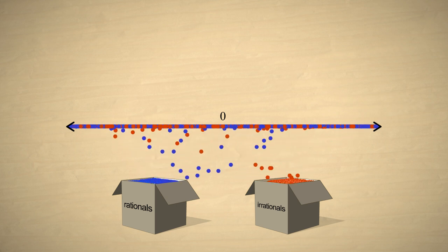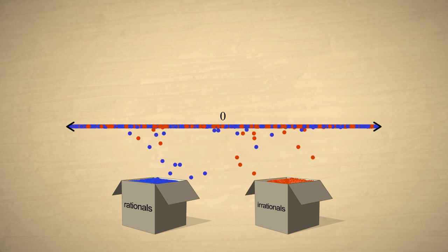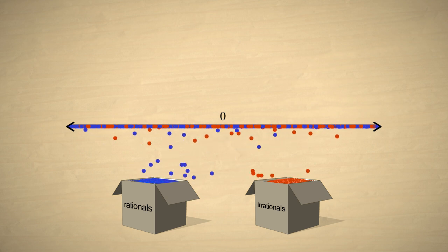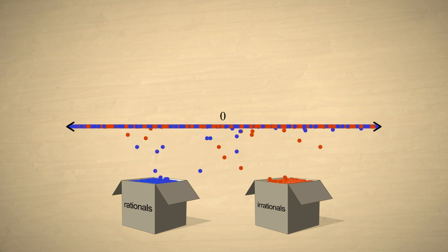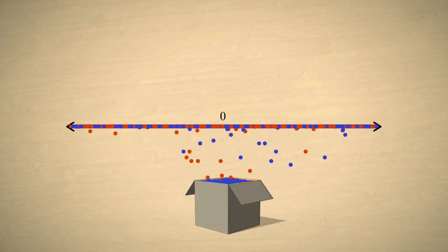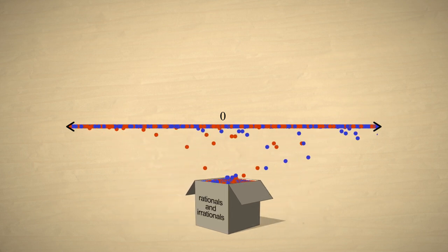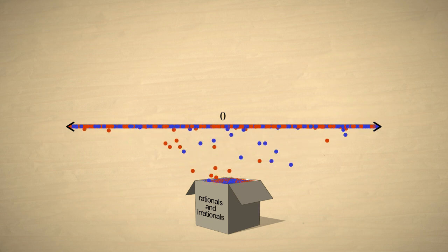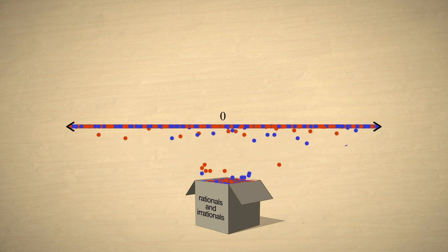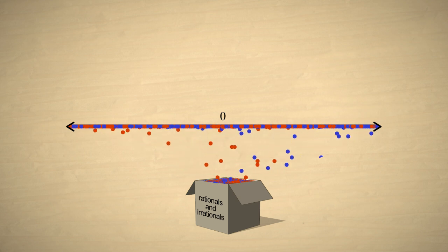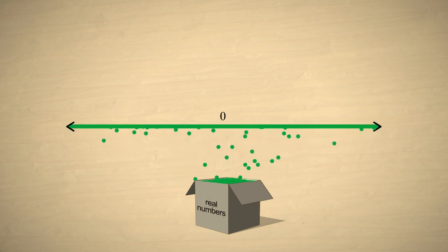We now have two mutually exclusive collections of numbers. Each collection can represent some quantities but not others. However, if we combine the rational and irrational numbers into a single group then we can represent any type of quantity in the real world. This collection composed of rational and irrational numbers is called the real numbers.